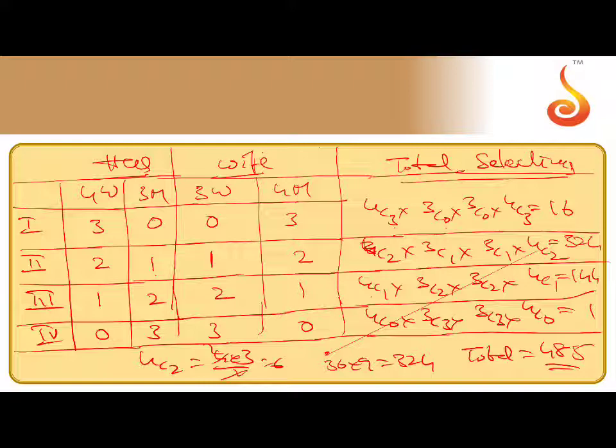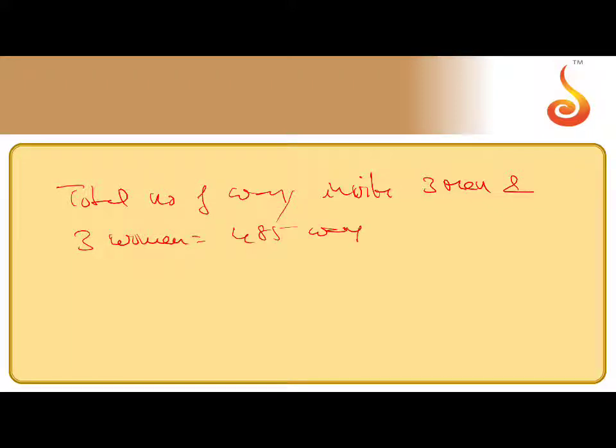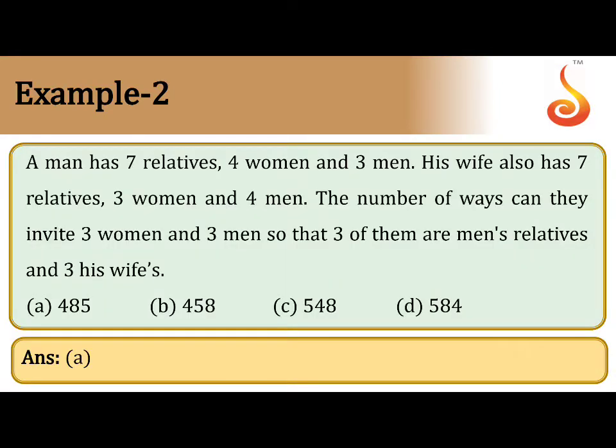485 is the total number of ways to invite. Therefore total number of ways invite 3 men and 3 women equal to 485 ways only. Number of ways invite 3 men and 3 women, so from 7 relatives of men and 7 relatives of women, so in 485 ways only. Check the answer, here is the right answer.